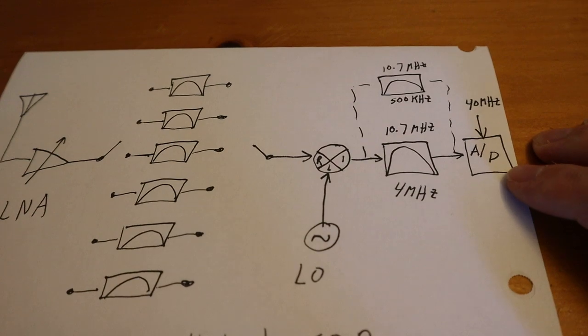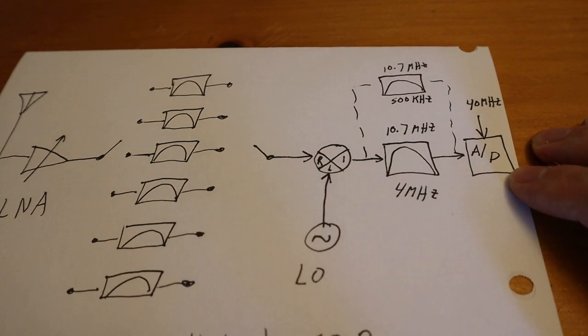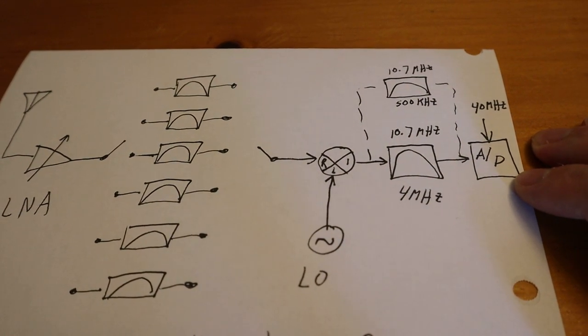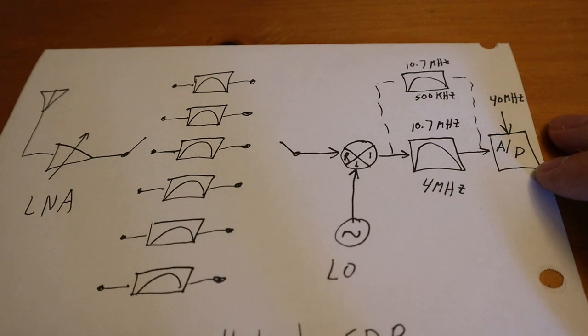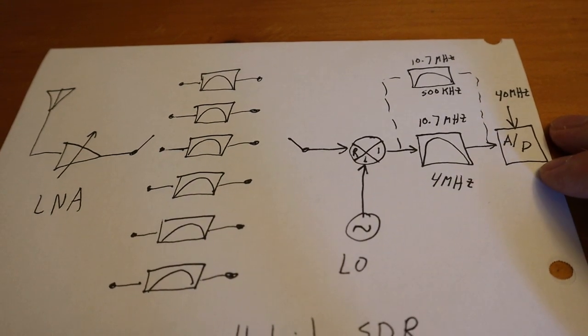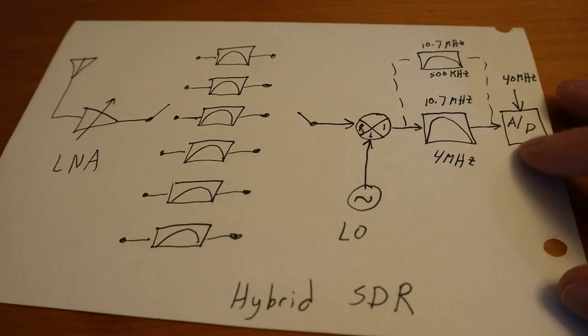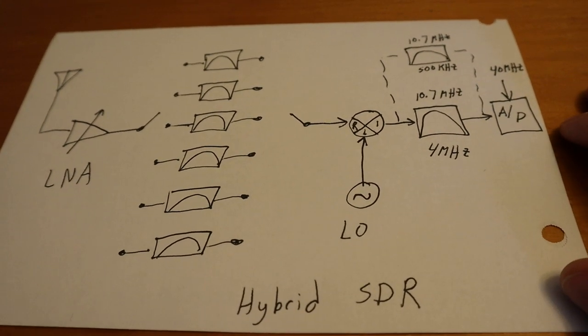Now most of the filtering these days can be done with an A to D, but you still can gain a lot by doing bandpass filters in the analog, especially when you're trying to deal with neighboring strong signals. So I would call this a hybrid SDR radio.